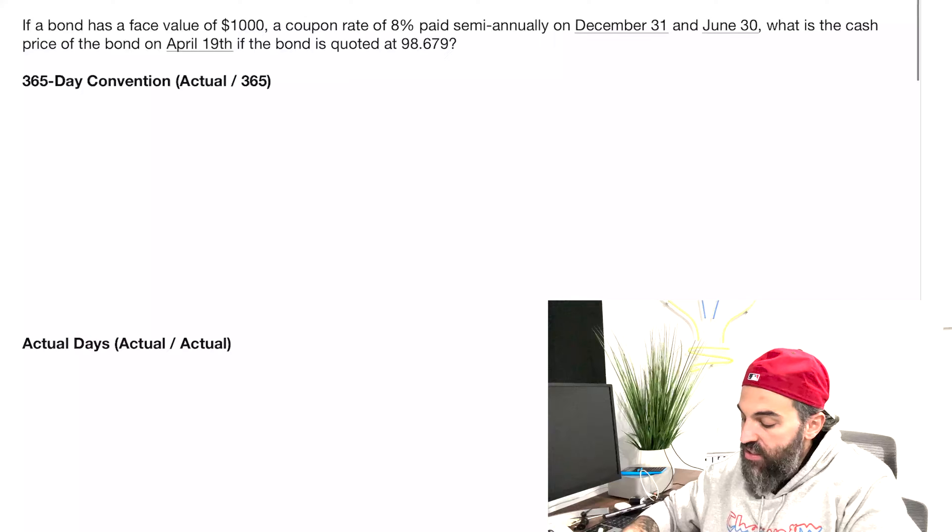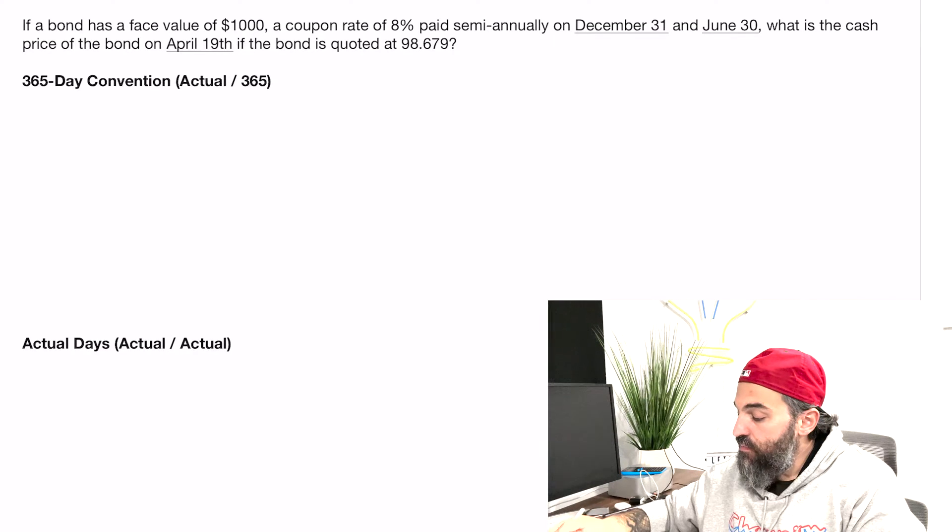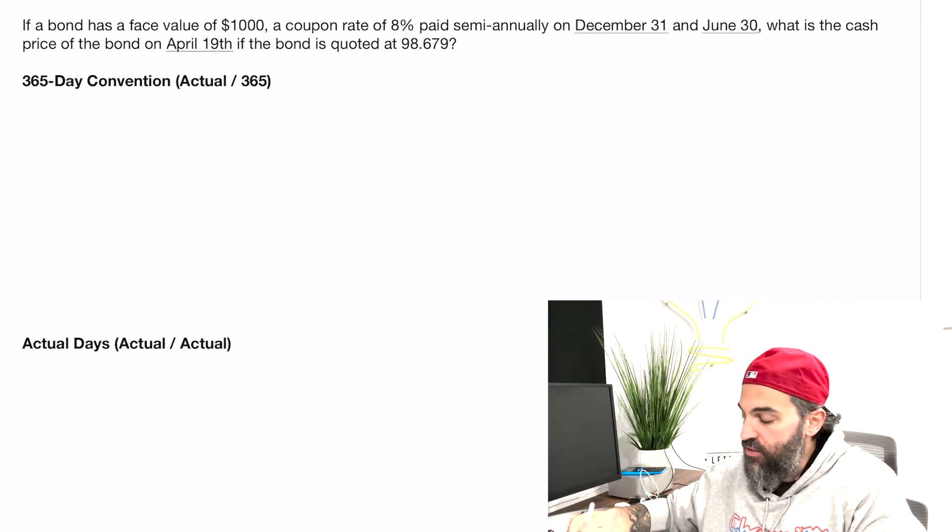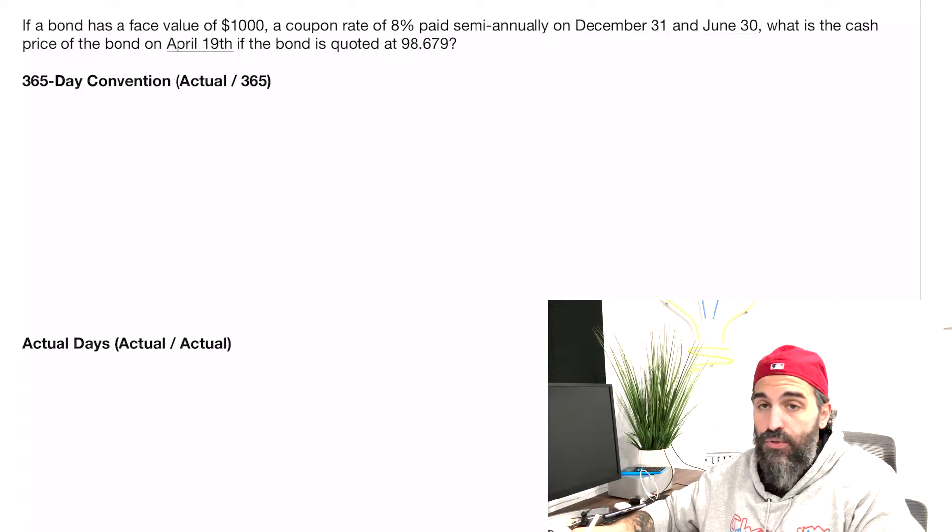In this case, the bond has a face value of $1,000, a coupon rate of 8% paid semi-annually on December 31st and June 30th. We're asking for the cash price of the bond on April 19th if the bond is quoted at 98.679.